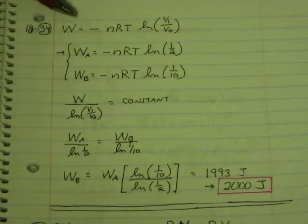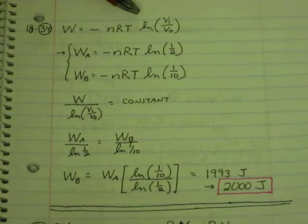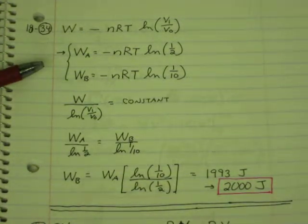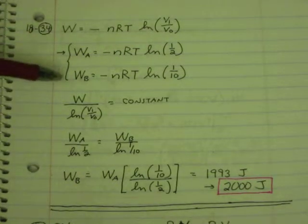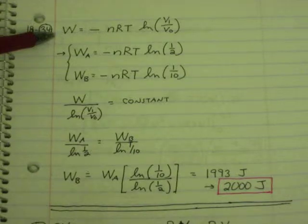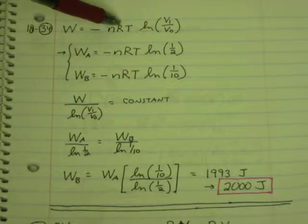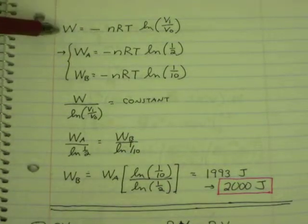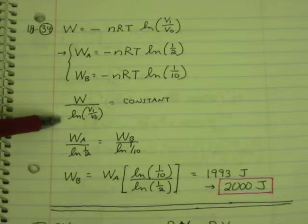So we start with the recognition that work equals negative nRT times the natural log of final over initial volume. I'm going to separate this into A and B. A is the case where we're compressing it in half. B is the case where we're compressing it by a factor of 10. So you can see natural log of 1 half, natural log of 1 over 10. Now, going back to the top equation, I use the technique that I often use in these problems. I set the, put the things that are changing to the left, everything that's constant to the right.